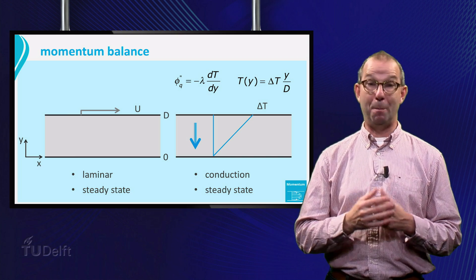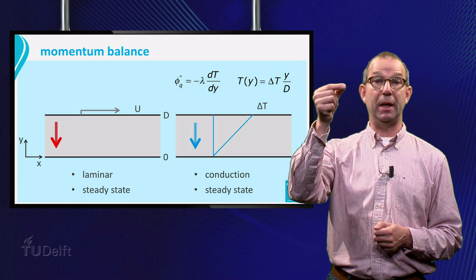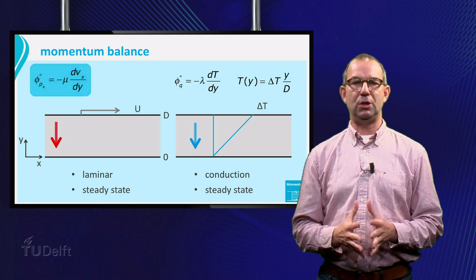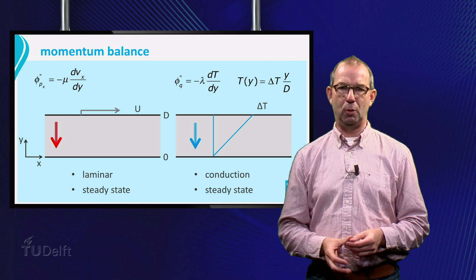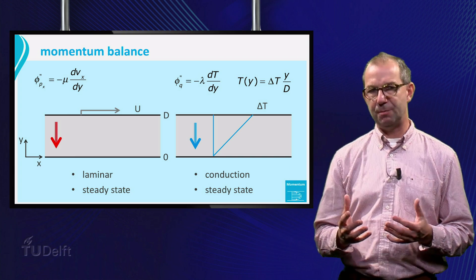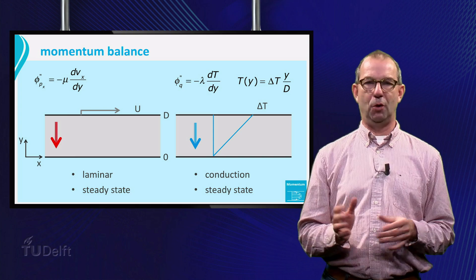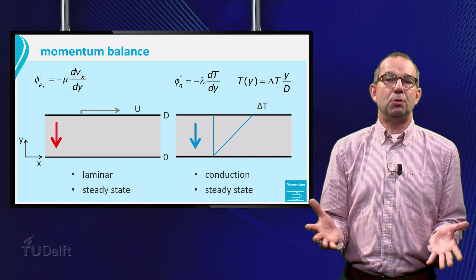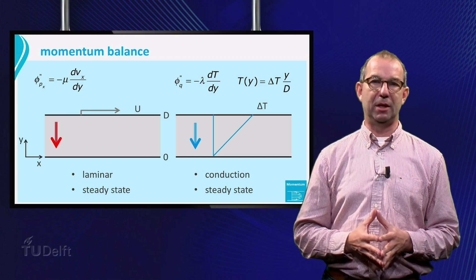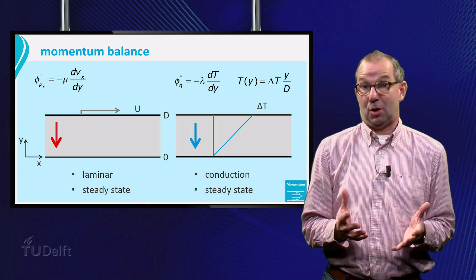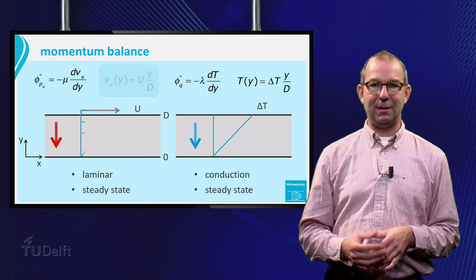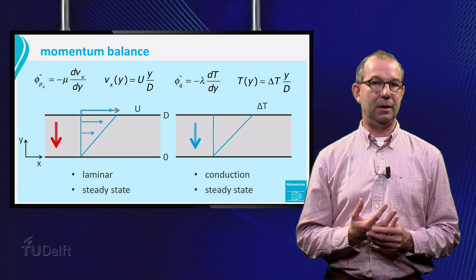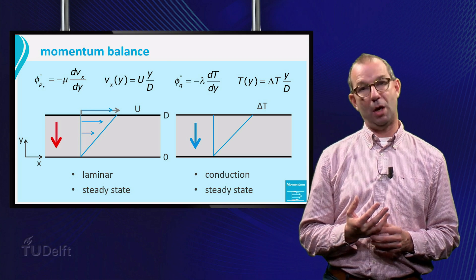For the flow case, we have that momentum is flowing from the fast top plate to the slow bottom plate. Newton's viscosity law describes this momentum flow that is diffusive in nature. That is, there is no convection of momentum in the y-direction. As Newton's law and Fourier's law are mathematically similar, and since our cases are quite alike, we can expect a linear relation for the momentum profile in the fluid, just like the linear temperature profile in the right drawing.